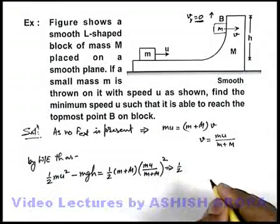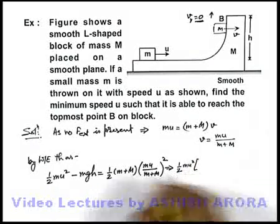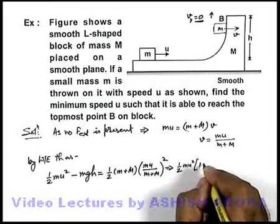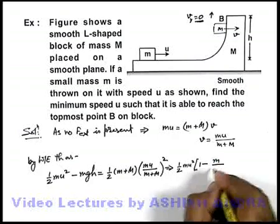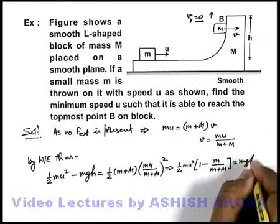So see, I just try to write this simplified form. It is half m u square into, I'll take this one common, minus small m upon small m plus capital M is equal to small m g h.